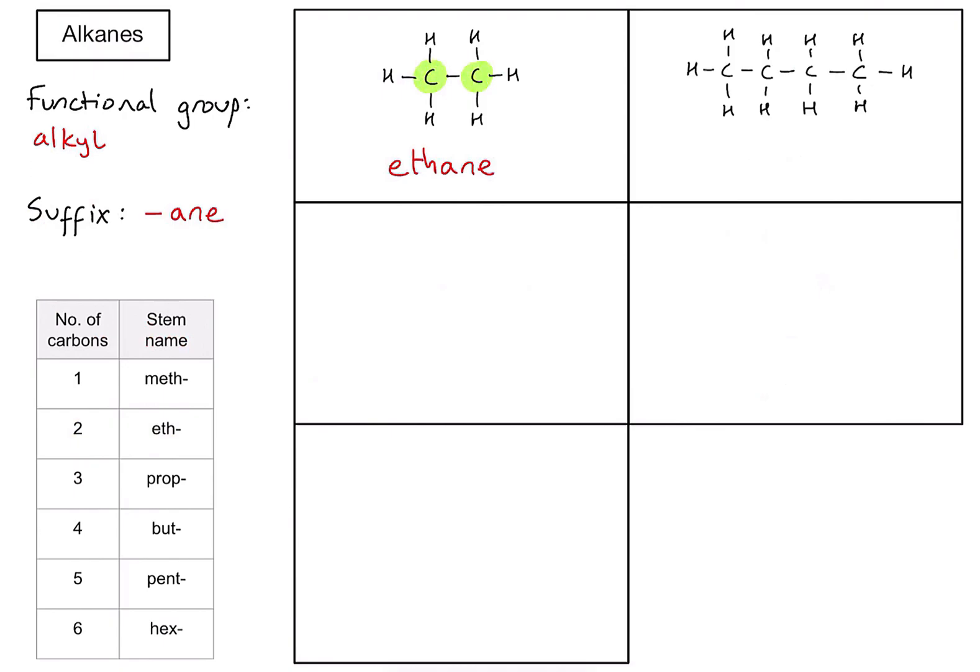Let's try a second one. In this case, let's count the carbons in my main carbon chain. I've got one, two, three, four. Four means the stem name is going to be but-, so let's write down but-, and it's an alkane so it's going to end with -ane: butane.